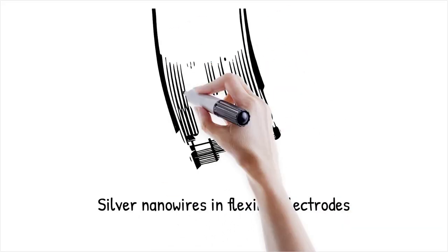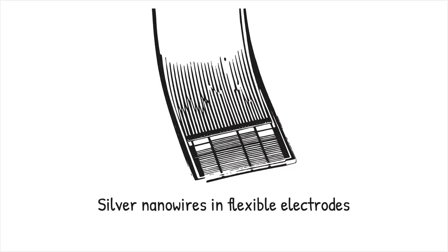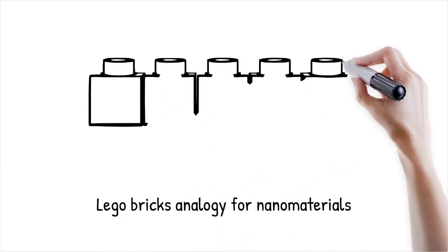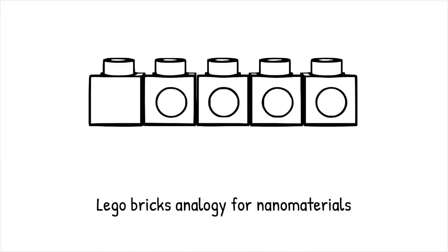Silver nanowires are used in flexible, transparent electrodes that combine conductivity with bendability. It's like building custom-tunable Lego bricks whose connectivity changes depending on their individual dimensions.